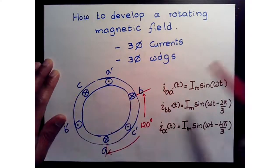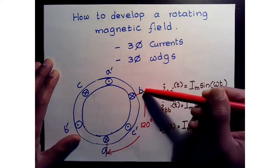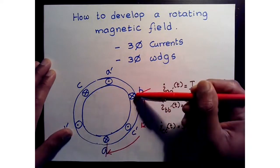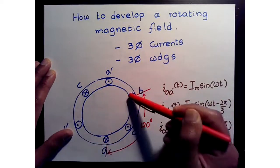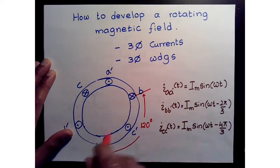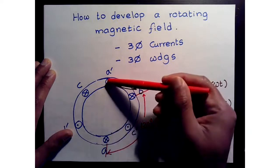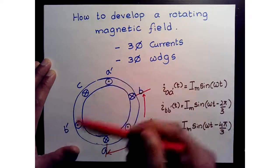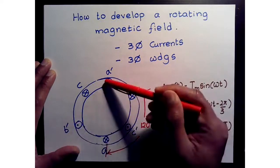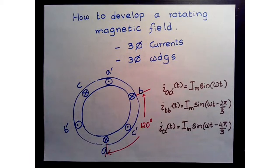Here we are considering only the stator. The reason we call them a three-phase winding is because the A, B, and C windings are 120 degrees apart. You can see they all have the cross symbol, meaning the current is going in. Those three windings are 120 degrees apart, and for each A winding there is a return conductor or return set of conductors which are again 120 degrees out of phase from the corresponding B-prime and C-prime set of windings.